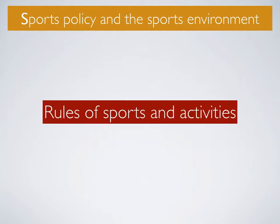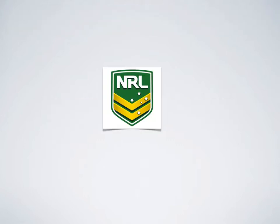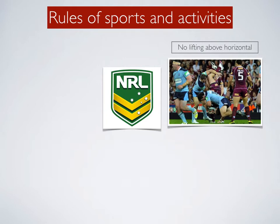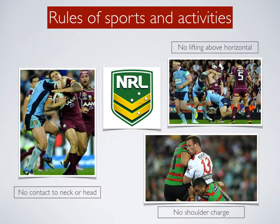We'll begin by looking at how rules of sports and activities can ensure that players can participate safely and successfully. The National Rugby League is a heavy contact sport and there are a range of rules to ensure that players are kept safe, such as no contact with the head or neck, otherwise known as a high tackle, no lifting above horizontal, otherwise known as a spear tackle, and no shoulder charges. By having these rules in place, players are more likely to be kept safe and avoid hard tissue injuries, soft tissue injuries and more serious injuries to the spine and also concussion.